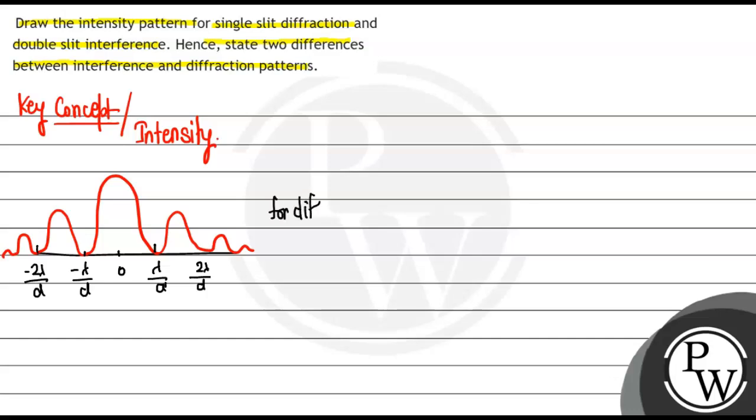For interference, basically the rays always superpose with each other or superpose with another ray coming from the coherent sources and they form fringe patterns. When the fringe patterns are made, all the intensities are the same, whether at the central location or any other location.